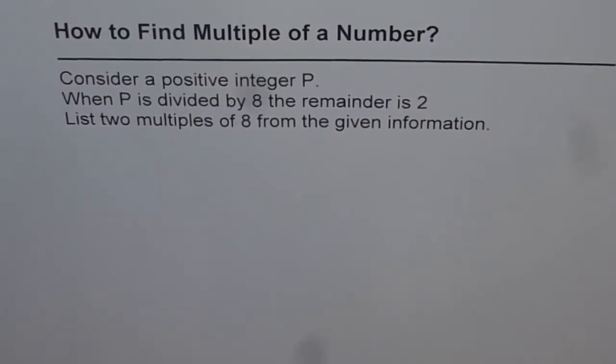How to find multiple of a number? Consider a positive integer p. When p is divided by 8, the remainder is 2. List two multiples of 8 from the given information.